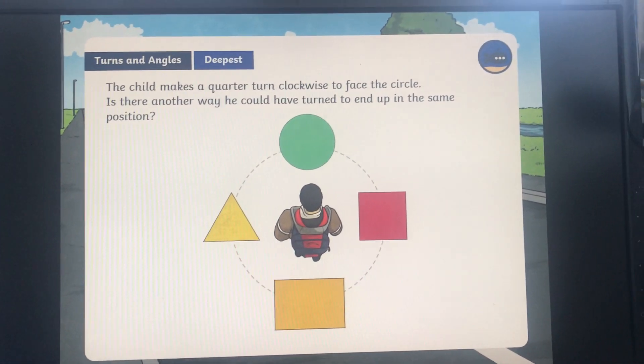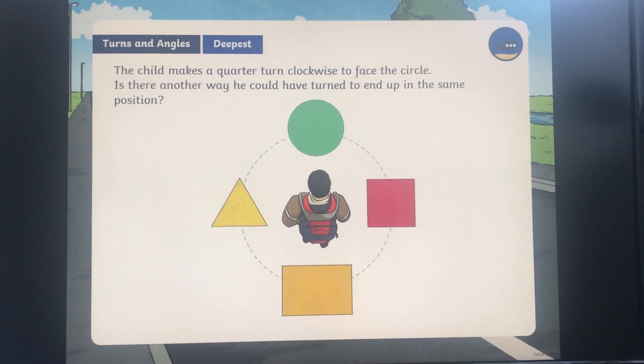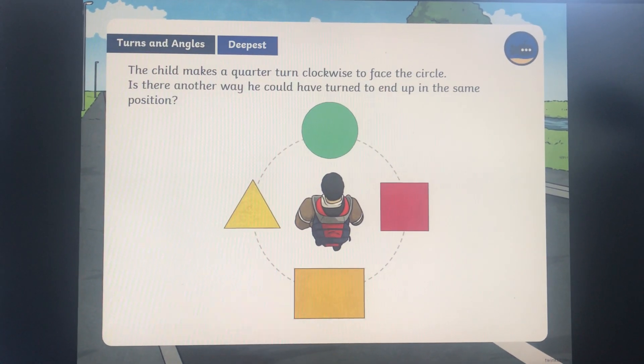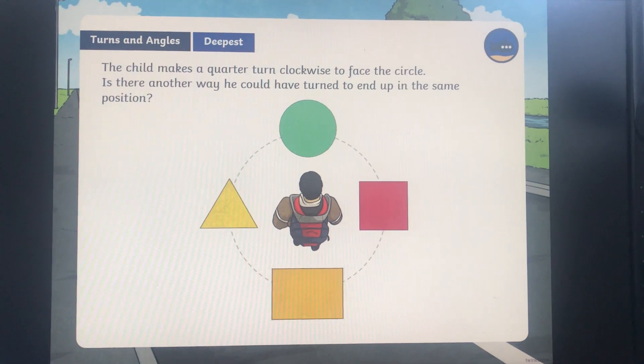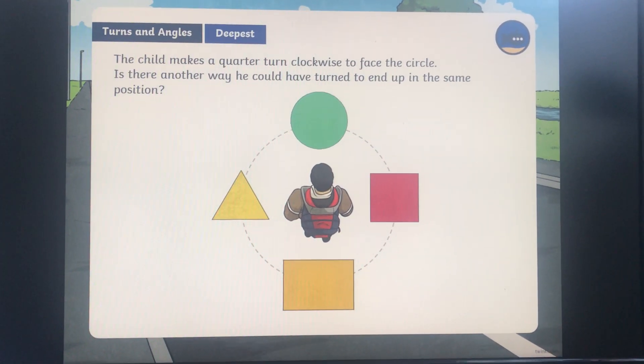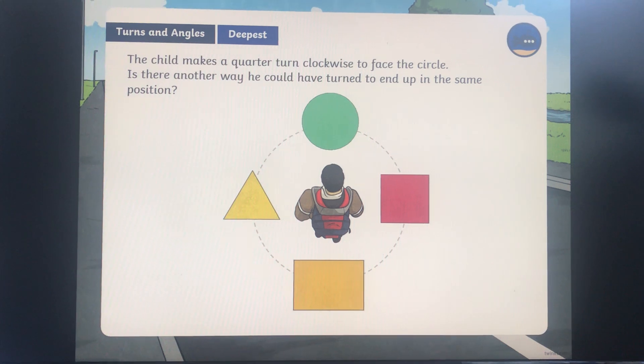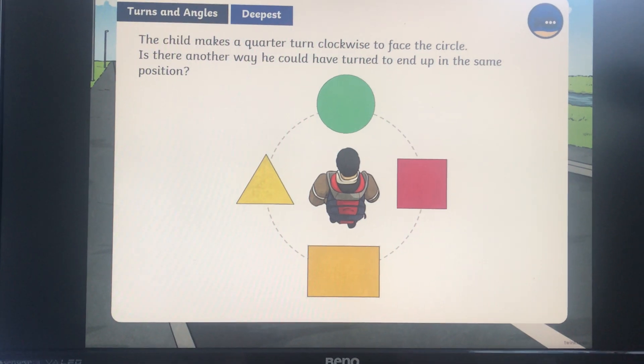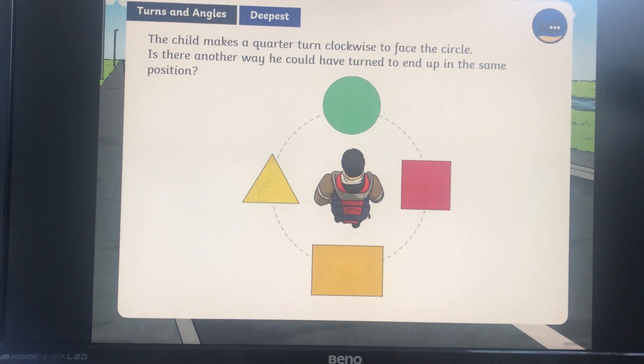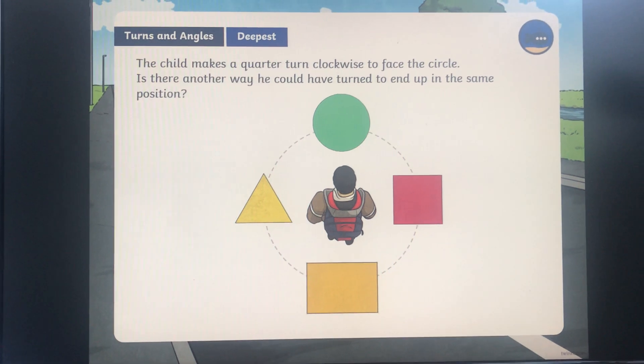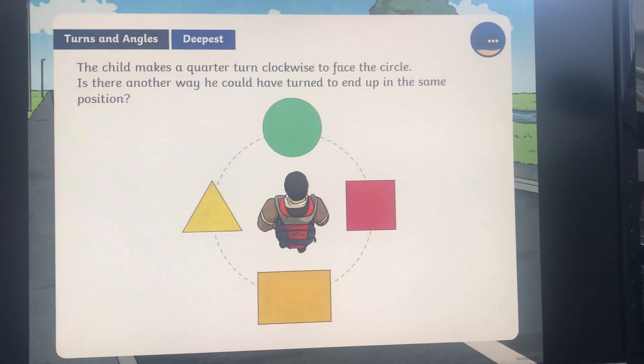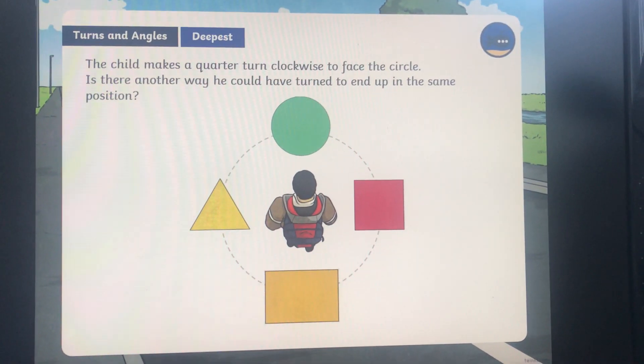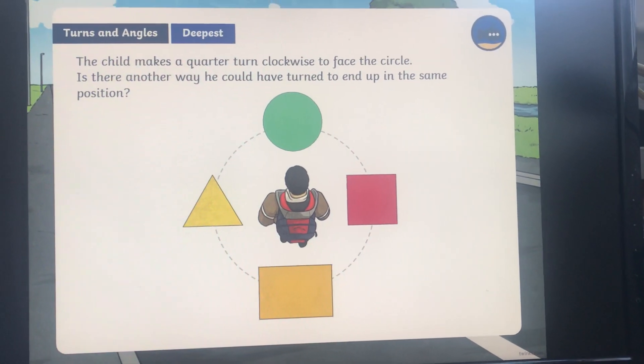This is a game that is really good to play at home. You could ask one of your parents or a family member to give you some instructions. You could start maybe facing a door in one of your rooms in your house. And your parent could ask you to turn either a quarter, a half, or two quarters, which is the same thing, or three quarters, either clockwise or anti-clockwise. It's a really good and fun way of practising turns in quarters clockwise and anti-clockwise.